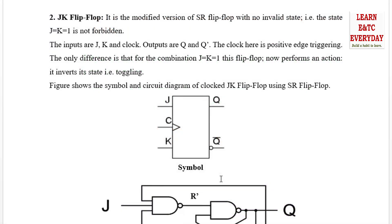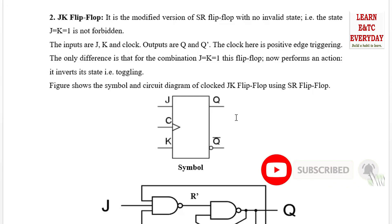The JK flip-flop is a modified version of the SR flip-flop with no invalid state — there is no invalid state here. In an SR flip-flop, when clock is 1, S equal to 1, R equal to 1, we get a race-around condition called a forbidden state, which is not allowed. Both outputs become 1, which is not valid — that is called the forbidden or undefined state. But the state J equal to K equal to 1 is not forbidden in the JK flip-flop.